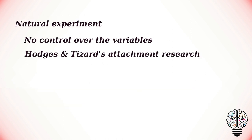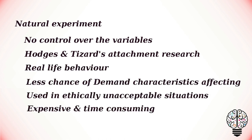Natural experiments are also conducted in real life environments of the participants, but here the experimenter has no control over the independent variable, as it occurs naturally in real life. For example, Hodges and Tizard's attachment research compared the long-term development of children who had been adopted, fostered, or returned to their mothers with a control group of children who had spent all their lives in their biological families.